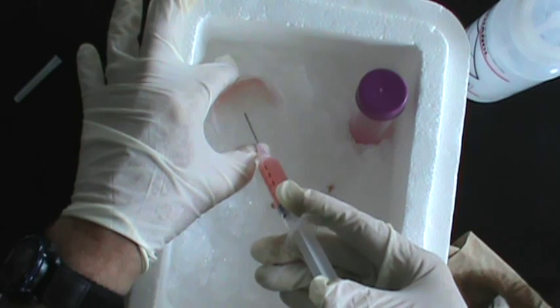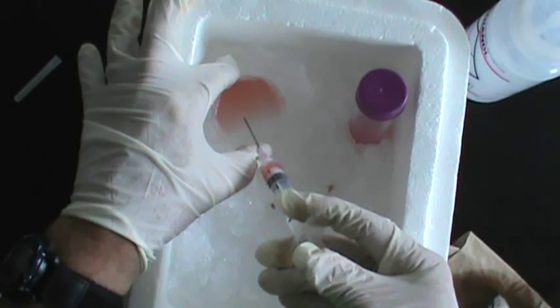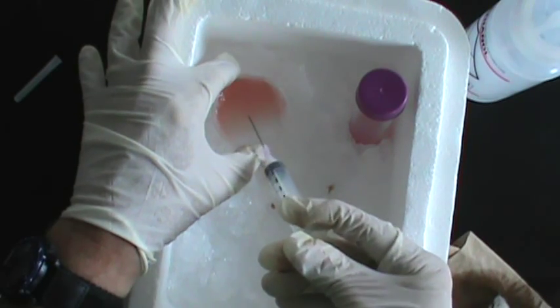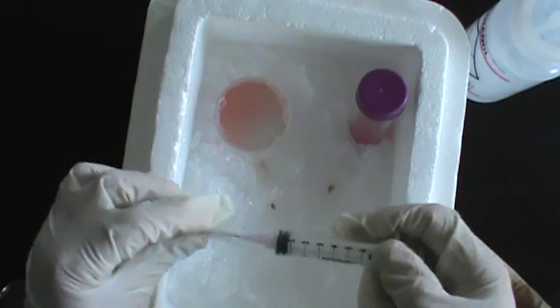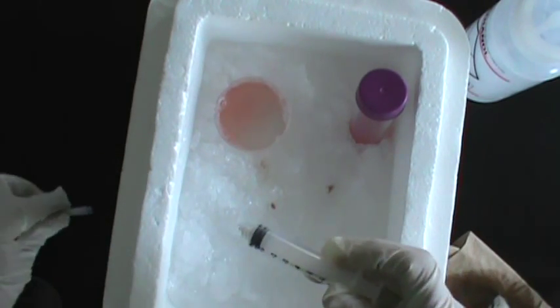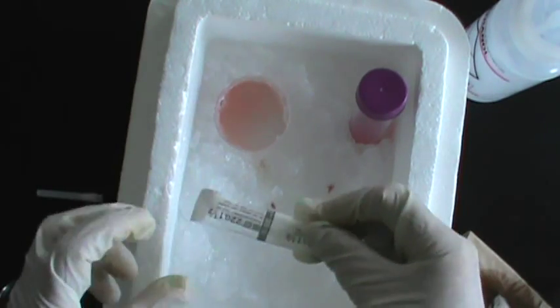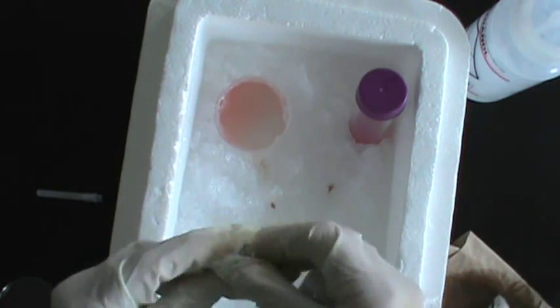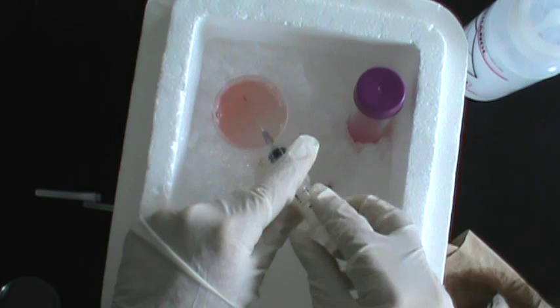Throughout this entire procedure, we want to work as quickly as possible because the spleen cells have just been removed from their normal environment and they will sustain damage throughout this treatment. Then, after we use the 18 gauge needle, we then want to go to a slightly smaller needle, 22 gauge needle, and repeat the same process.